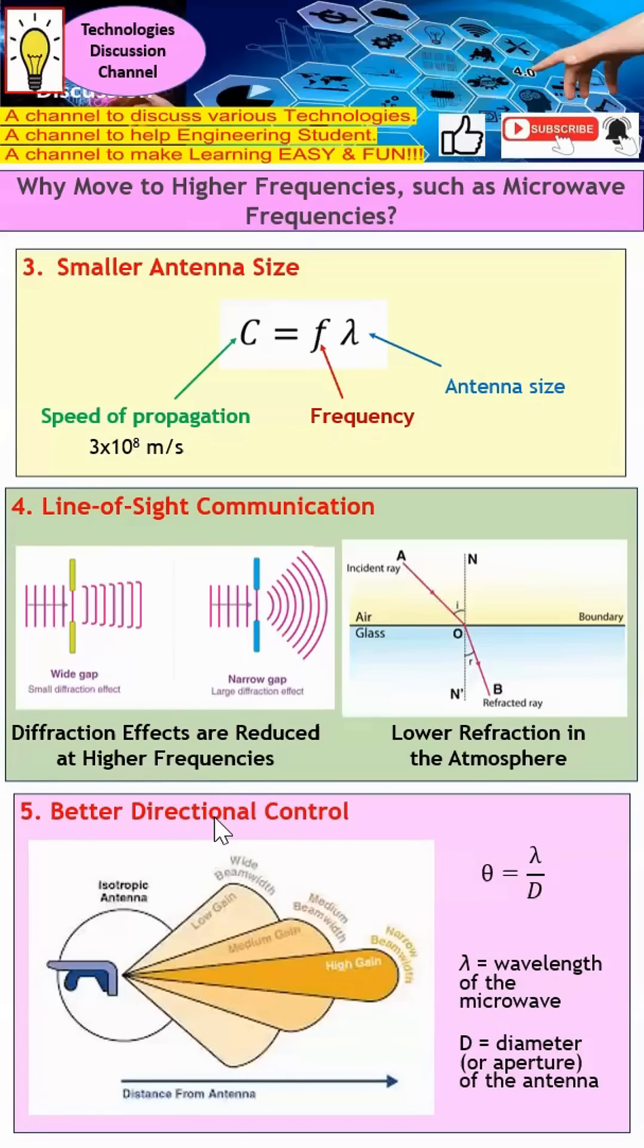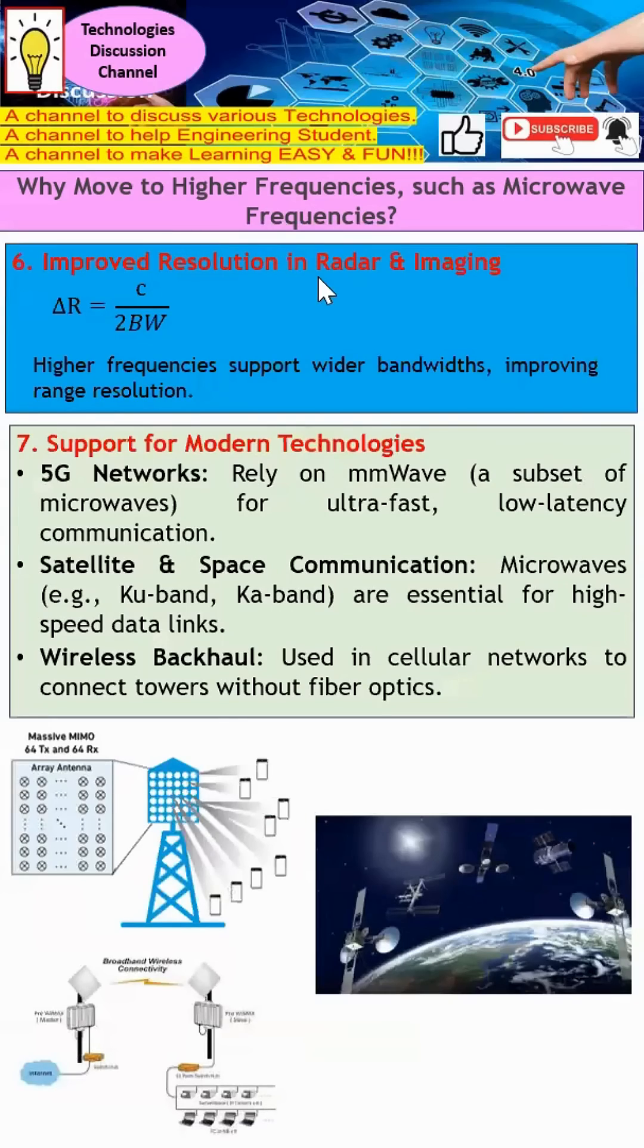Coming to reason number six, we have improved resolution in radar and imaging. In this equation, you can see it's ΔR over bandwidth. If we have higher bandwidth, which means supporting higher frequency, this will be reduced, which means I have better resolution.